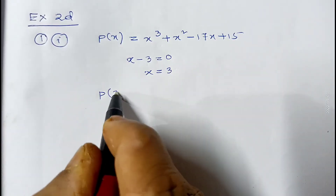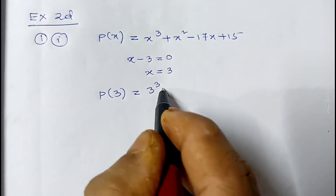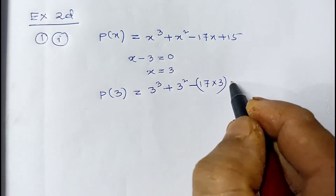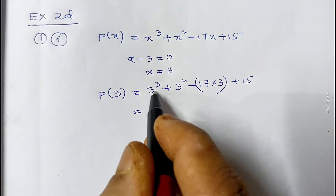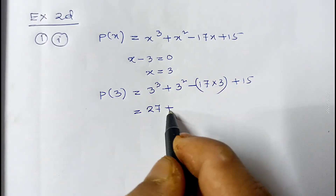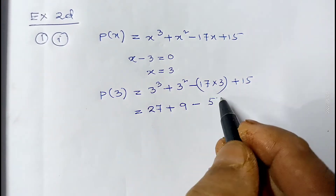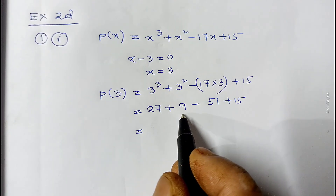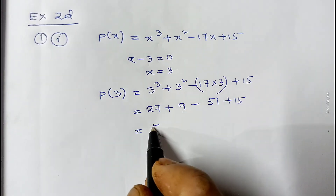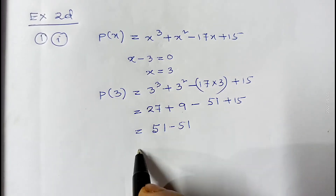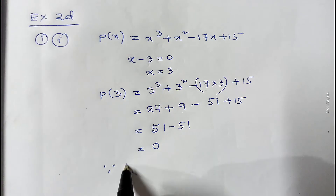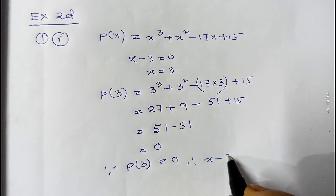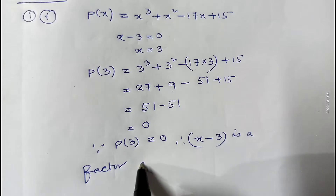Now we replace x by 3. So p(3) equals 3 cubed plus 3 squared minus 17 into 3 plus 15. That is 27 plus 9 minus 51 plus 15. Now 27 plus 9 is 36, and 36 plus 15 is 51, so it will be 51 minus 51, which gives 0. Since p(3) equals 0, therefore x minus 3 is a factor of the given polynomial p(x).